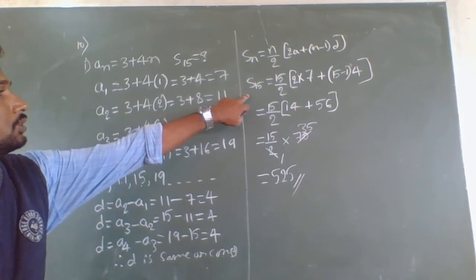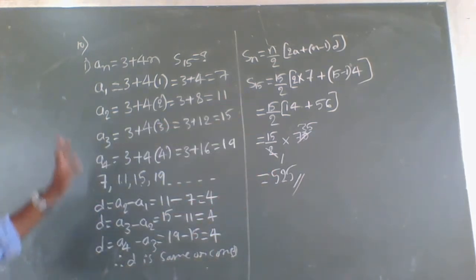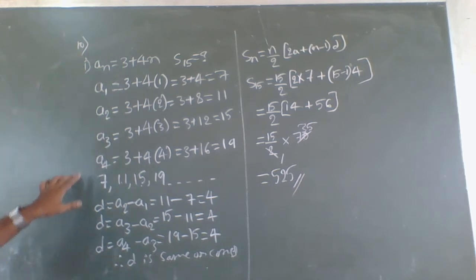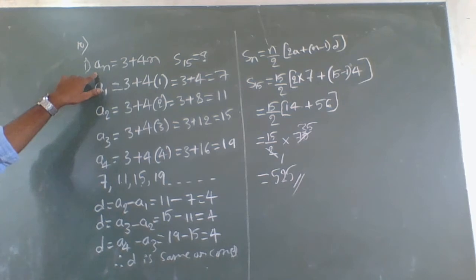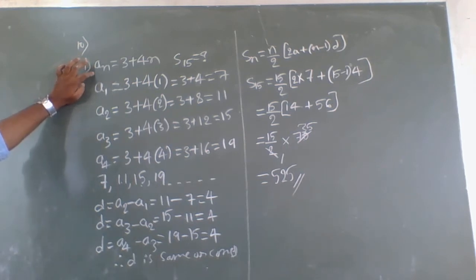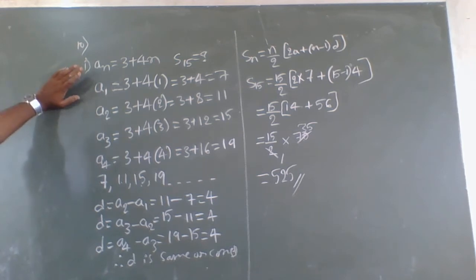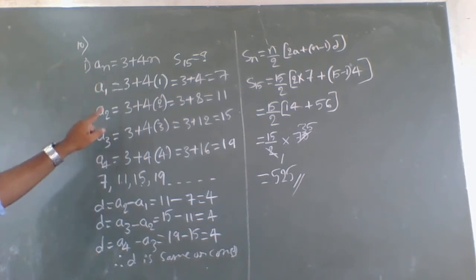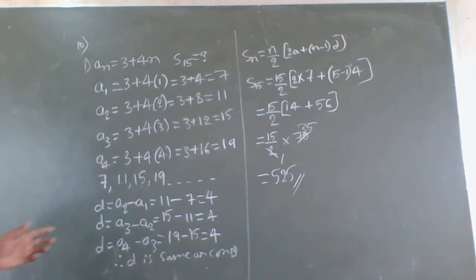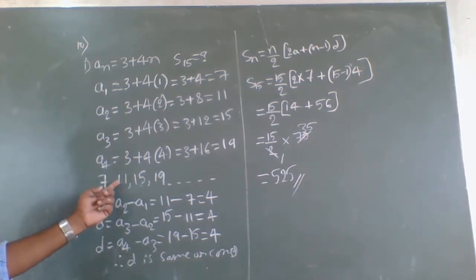To summarize problem 10: they gave the nth term as 3 + 4n. We had to prove it forms an AP and calculate S15. To prove it, we calculated four terms: a1, a2, a3, a4 by substituting n = 1, 2, 3, 4 and got 7, 11, 15, 19. Then we calculated d = a2−a1 = a3−a2 = a4−a3 = 4. Since d is the same, it is an arithmetic progression.